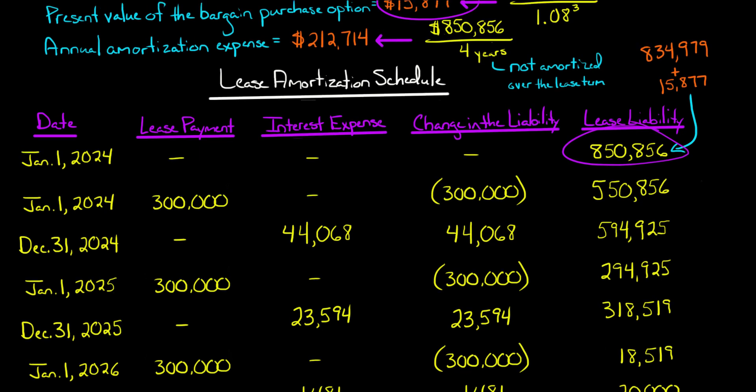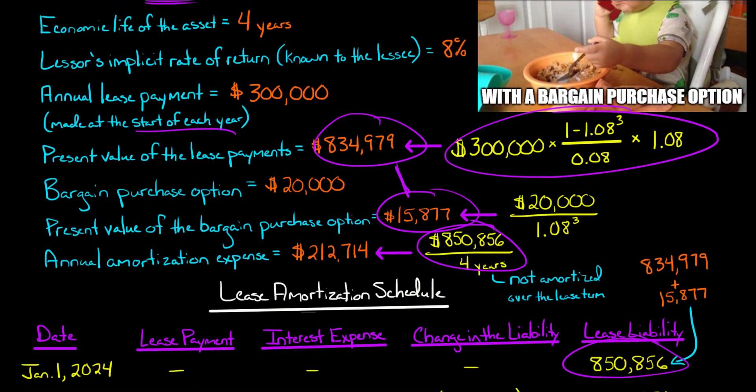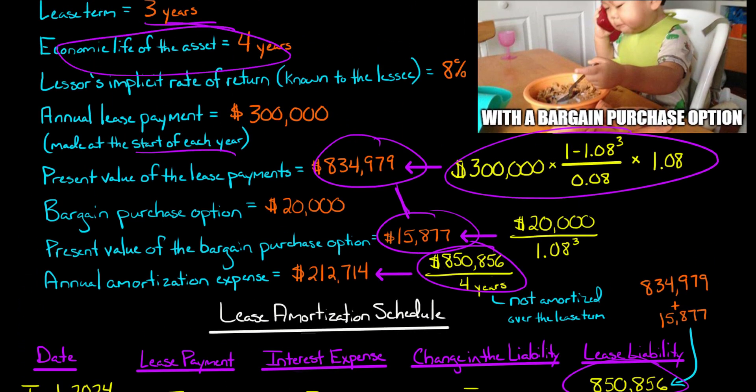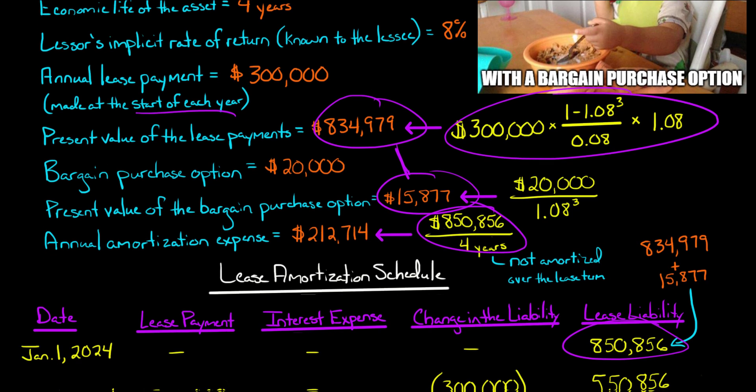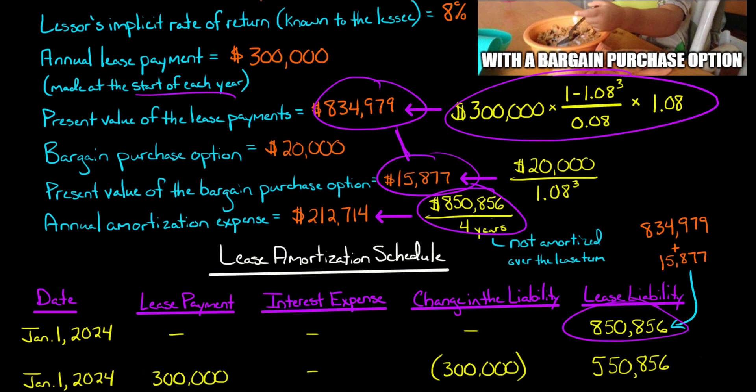One final thing: the right-of-use asset would be amortized over four years instead of the three-year lease term. That's because when there's a bargain purchase option — or when the lease transfers ownership to the lessee — the lessee amortizes the right-of-use asset over the remaining economic life of the asset instead of the lease term. The remaining economic life of the asset was four years, so that's why we're amortizing it over four years. To be clear, this is a finance lease, and the presence of the bargain purchase option right there meets one of the five classification tests for it to be a finance lease.